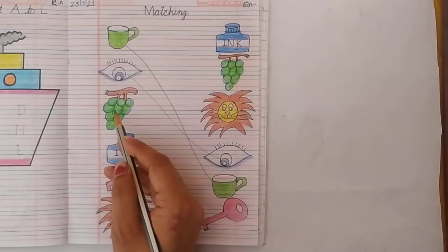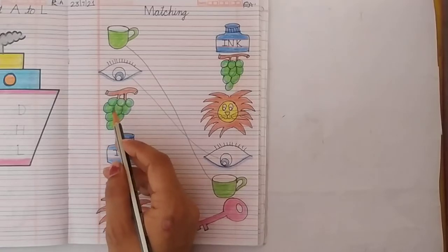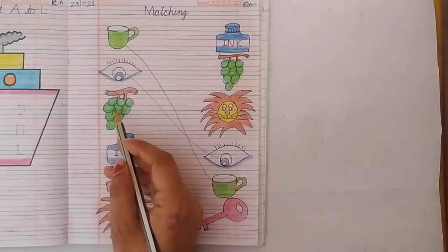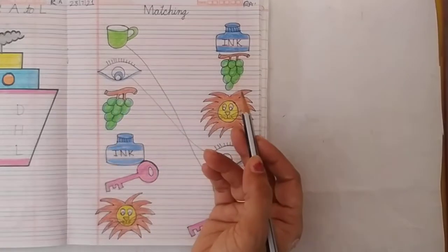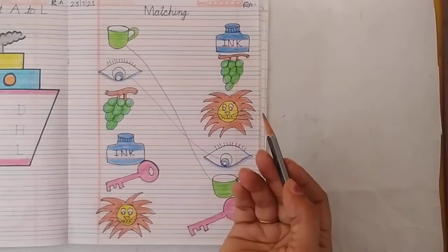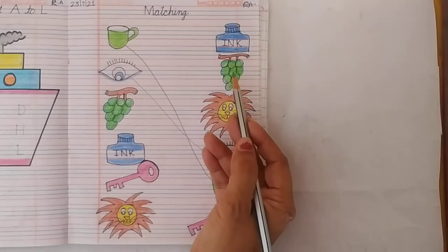This is a picture of grapes. The grapes. G for grapes. And where is the other picture of grapes? Kaha hai another picture of grapes? Yes. Here is.